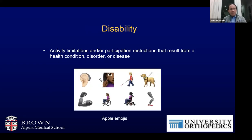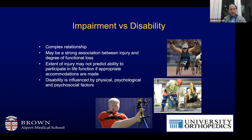Impairment is not to be confused with disability. Disability is activity limitations or participation restrictions that result from a health condition, disorder, or disease. There is a complex relationship between the two: there may be a strong association between injury and the degree of functional loss measured with impairment, but the extent of an injury may or may not predict the ability to participate in life function if appropriate accommodations are made. Disability is strongly influenced by physical, psychological, and psychosocial factors — which is different from impairment's quantitative assessment of loss.